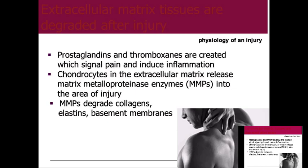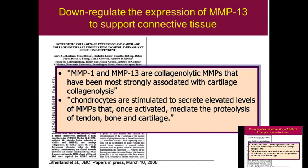The prostaglandins and thromboxanes, by signaling pain, trigger a neurological response to help the body heal itself. When you're not feeling pain, the neural system doesn't recognize it and it prolongs the healing process. Chondrocytes in the extracellular matrix release MMPs into the area of injury, which degrade collagen, elastin, and basement membranes. MMP-1 and MMP-13 are highly researched — they're collagenolytic and most strongly associated with cartilage breakdown or cartilage collagenolysis. Chondrocytes are stimulated to secrete elevated levels of MMPs that mediate proteolysis — the breaking down of tendon, bone, and cartilage.